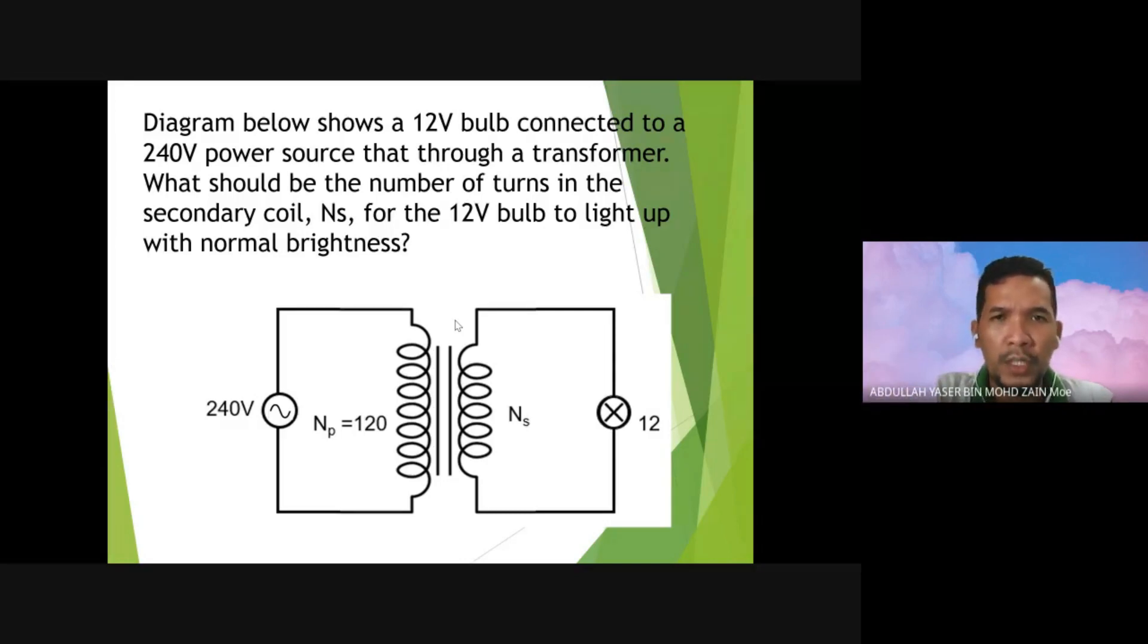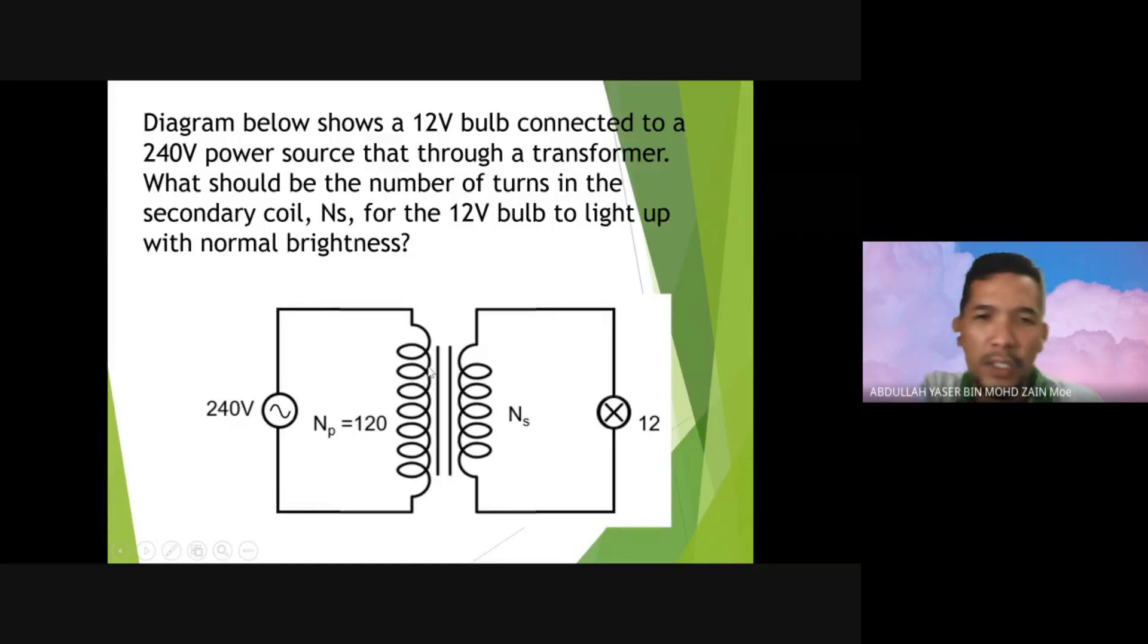From the diagram below, a 12-volt bulb is connected to a 240-volt power source through a transformer. What should be the number of turns in the secondary coil for the 12-volt bulb to light up with normal brightness? We have here primary voltage, NP turns of primary is 120, and we have 12-volt bulb. The missing part is NS only, the number of turns for secondary. Using the formula, you can solve the question. Let's see the solution.